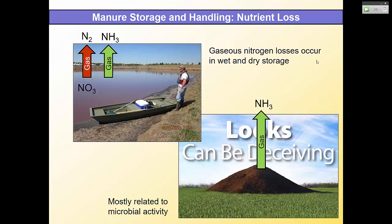You can also lose nitrogen in dry storage, mostly as ammonia. Ammonium is released first through mineralization, then can lose a hydrogen and go off as ammonia. Manure that sits around for a while — stored chicken litter under a shed or windrowed in the house — can lose nitrogen over time, essentially composting itself. That's another reason to take a sample right before application, and to take a good representative sample.